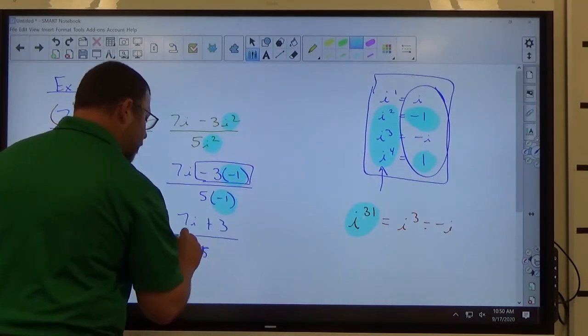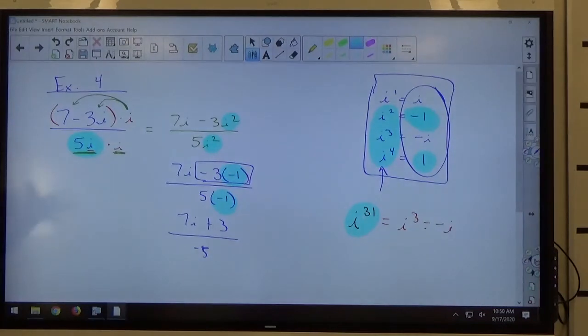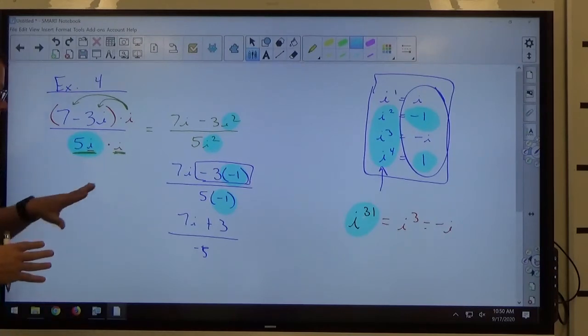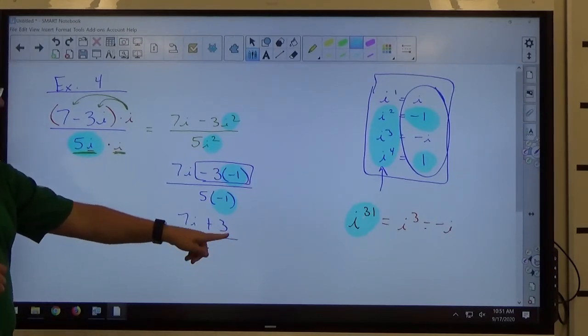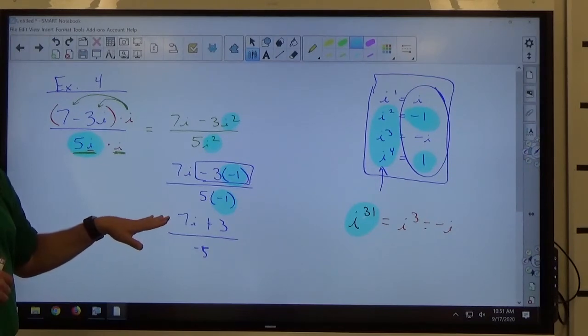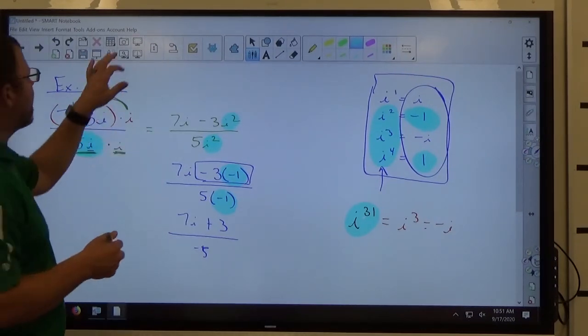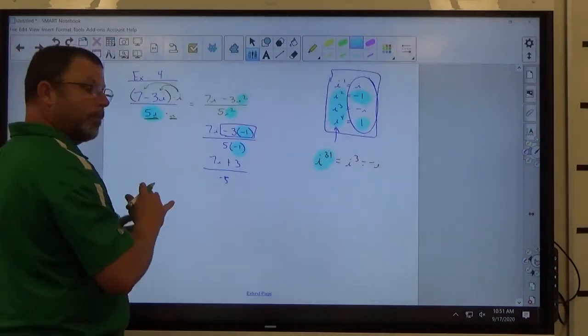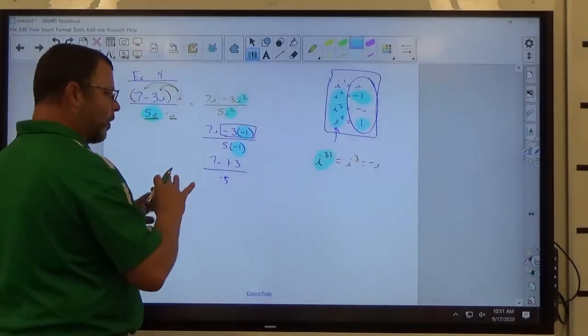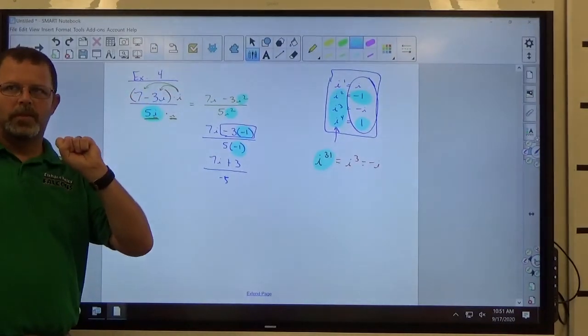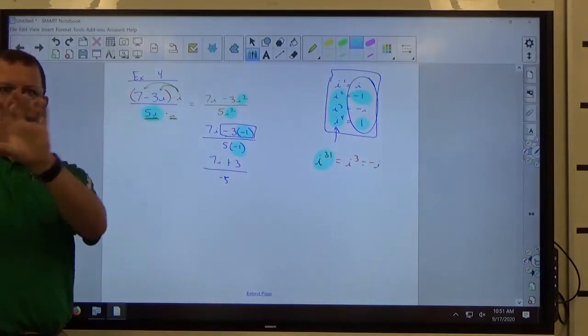Now when it says a plus bi form, it wants a real number followed by an imaginary number. That's what it wants. That's the structure it wants. The order on top is wrong. The real's in back, the imaginary's in front. That's the first thing. And the other thing is it's all over negative 5. So the last thing I want to do here with this problem to make it in the structure they're asking me for is I want to separate it into two fractions.